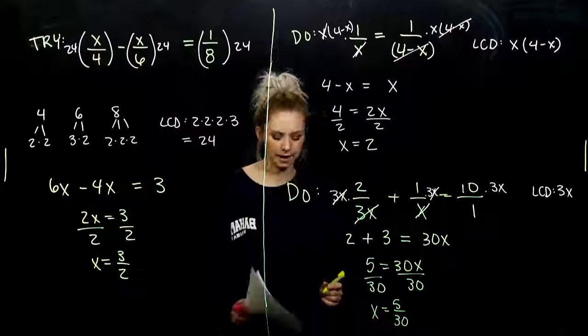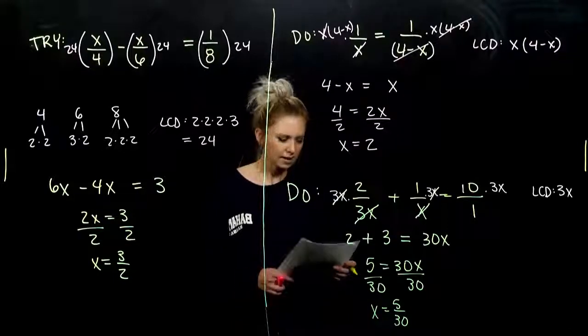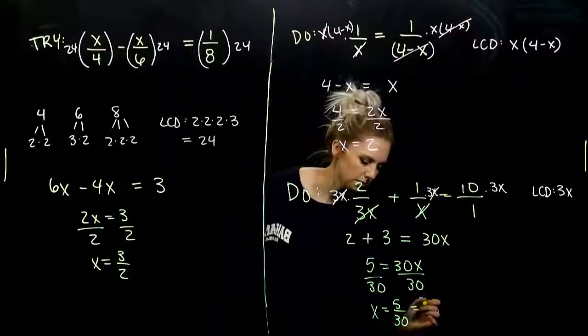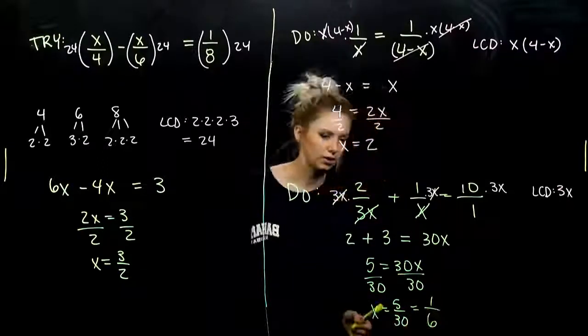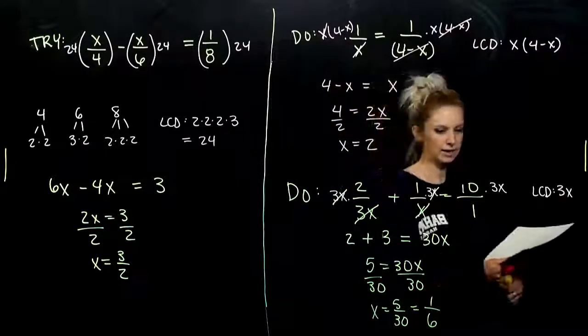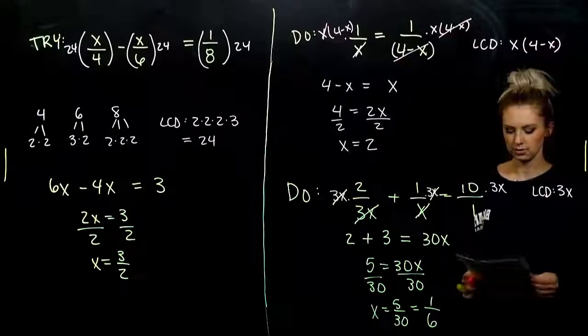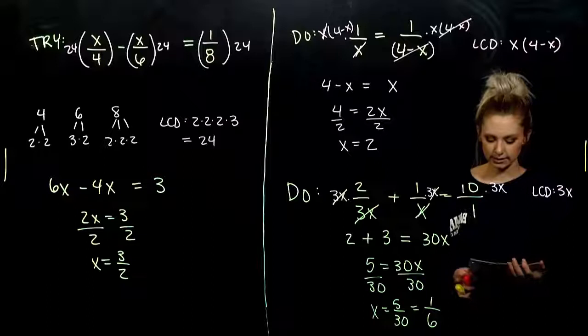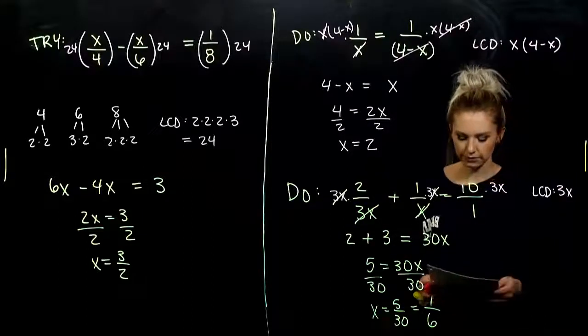And can we rewrite this in a nicer form? We always want to simplify if we can help it. 5 goes into 30 how many times? 6 of them. So I really have 1 over 6. And again, we can always plug back into the original, check and make sure that it holds true. So go ahead and take the next try. Solve for x.